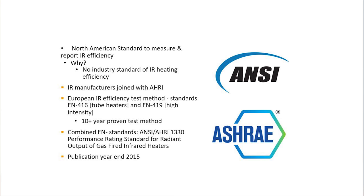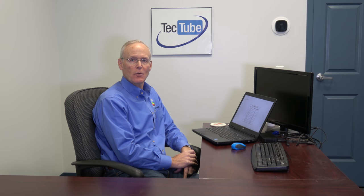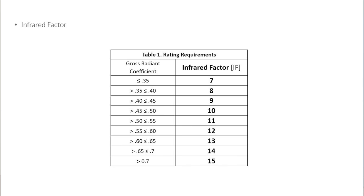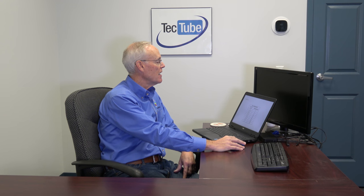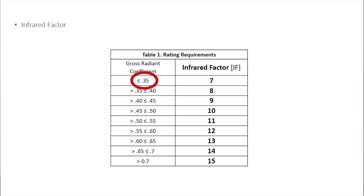Every manufacturer should have this standard. The way it works is it sets up a kind of SEER — if you want to call it that — in residential applications. It takes this gross radiant coefficient, established by setting up a grid pattern and monitoring the radiant temperature off of each four-inch by four-inch grid, and comes up with a gross radiant coefficient. Anything under 35 percent — the industry standard — gives an infrared factor of 7. Anything above 70 percent gives an infrared factor of 15, and that comes into play with the next slide.